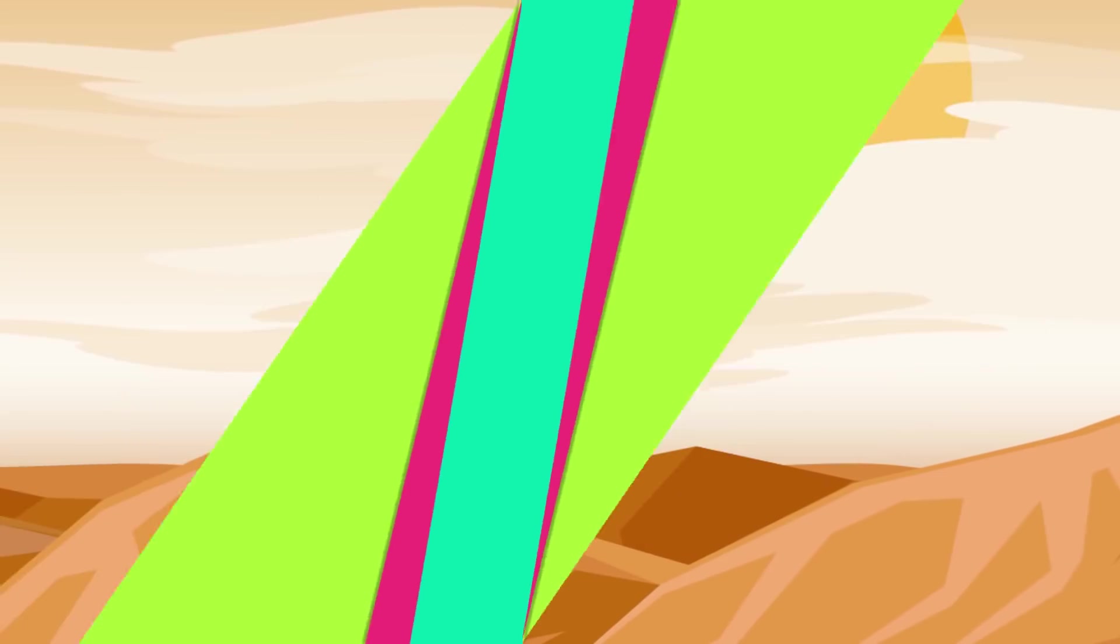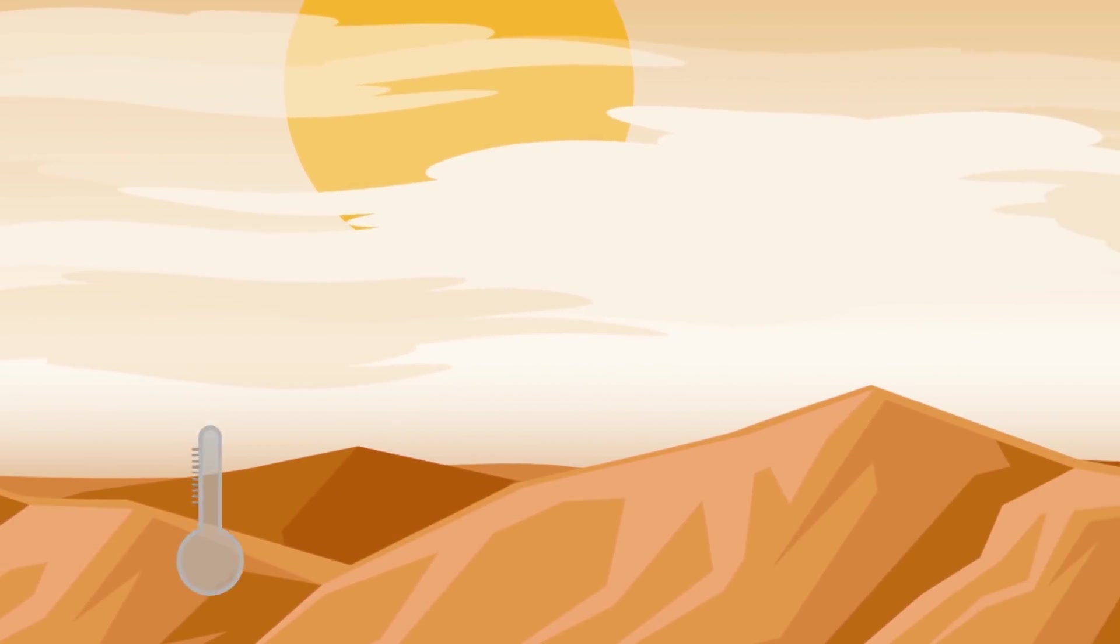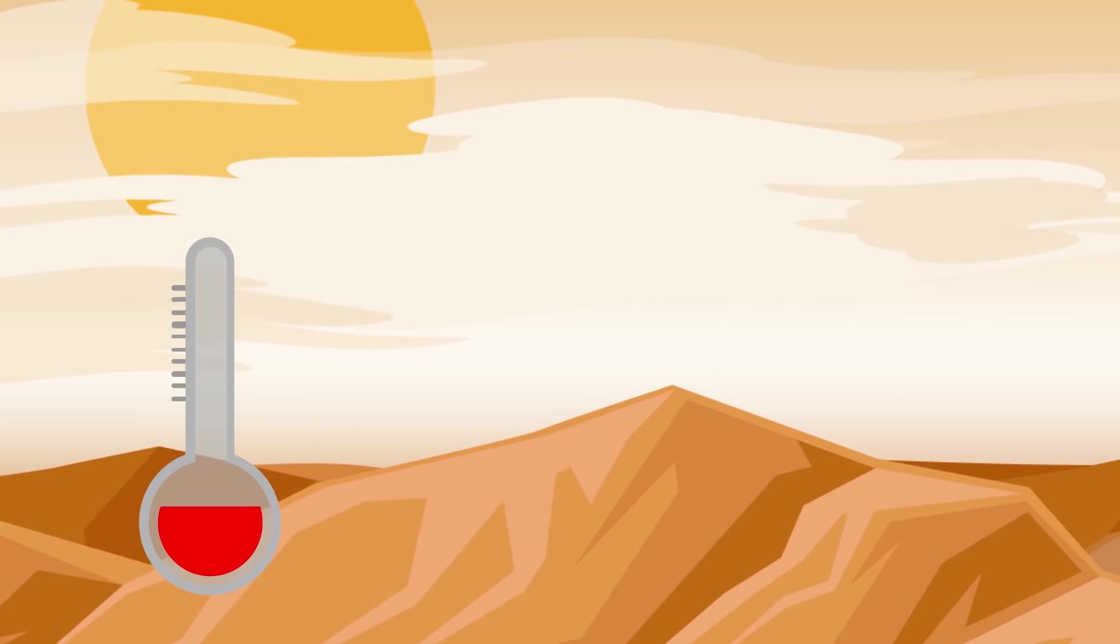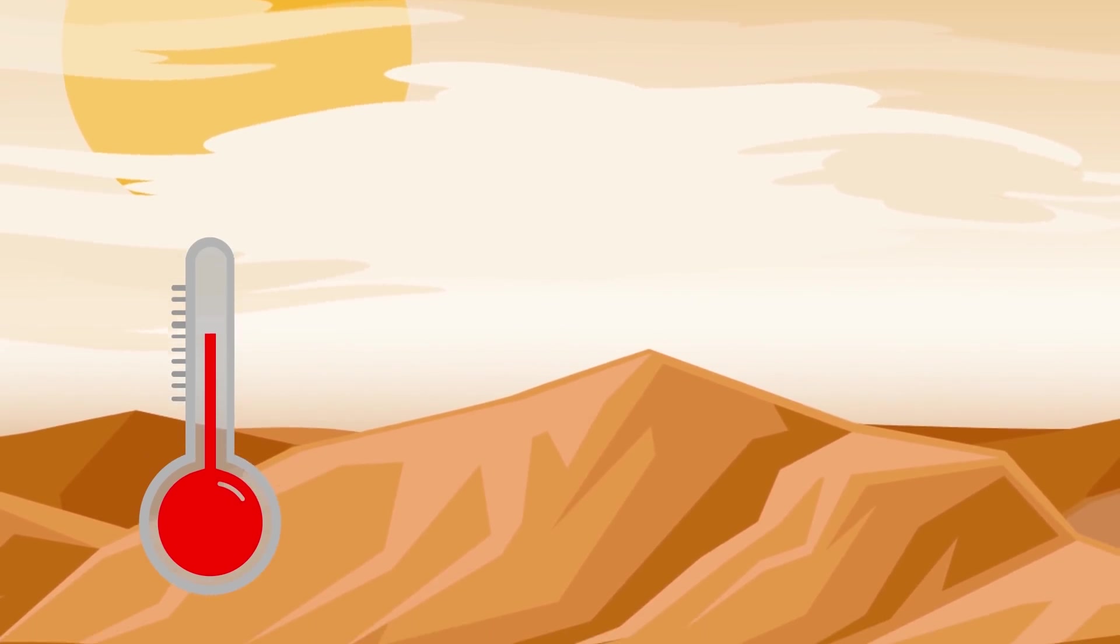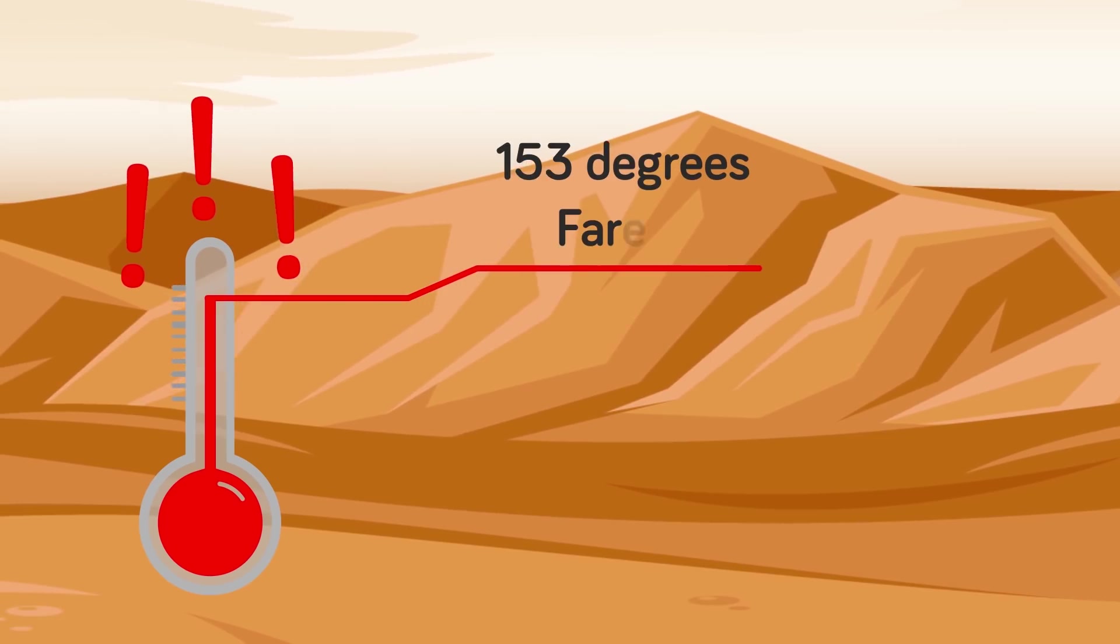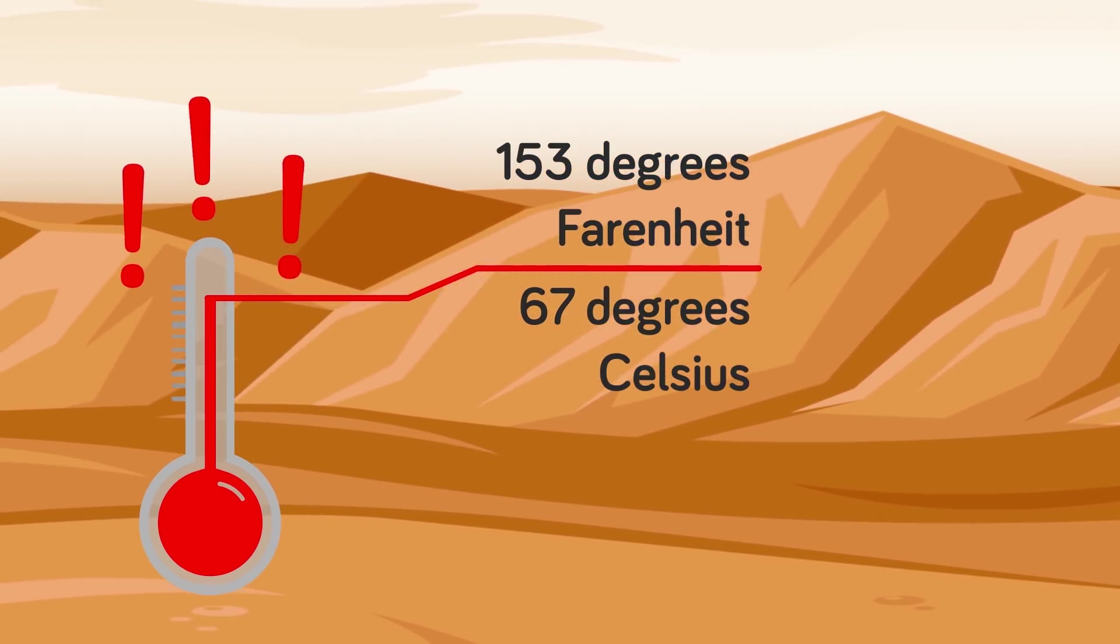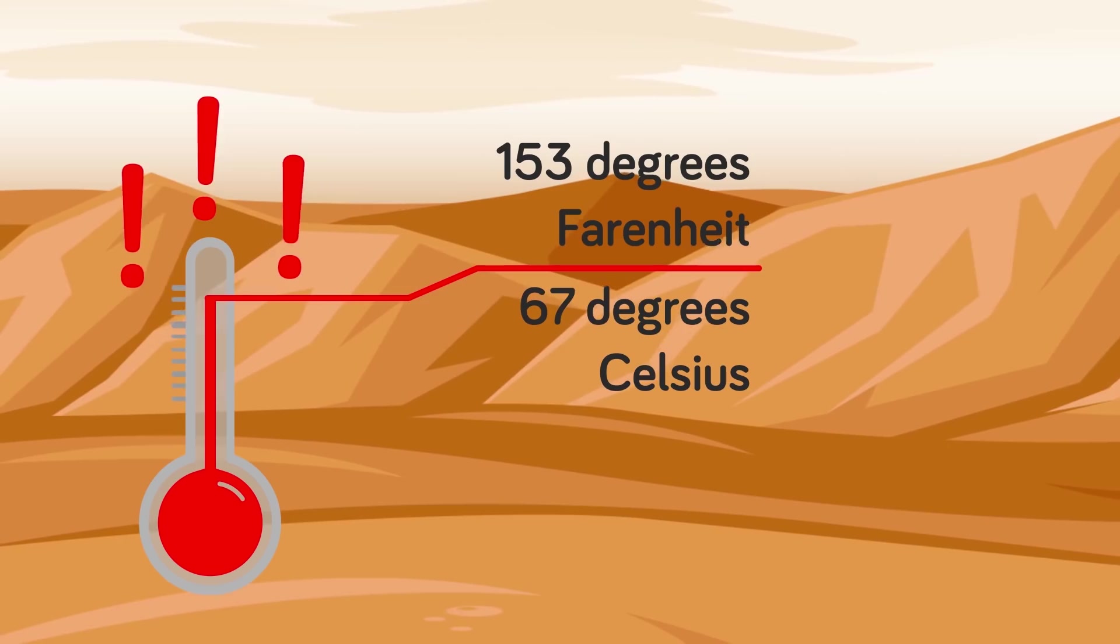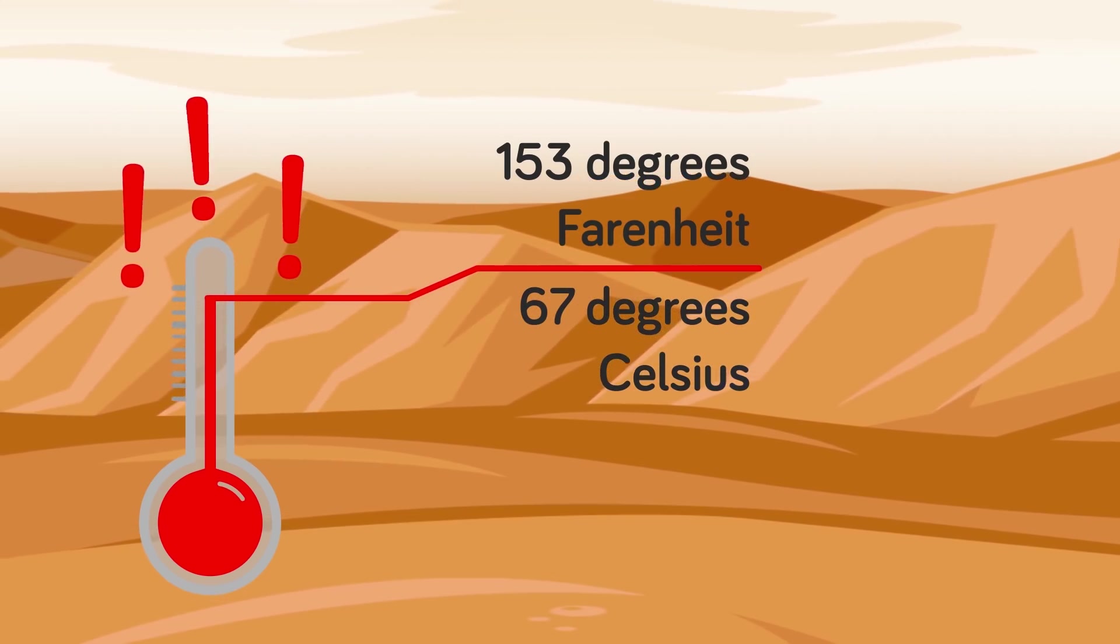At this point, the average temperature on Earth would be around 153 degrees Fahrenheit, making life on the surface completely impossible for any animal. Humanity would be forced to seek shelter from the scorching temperatures above, and our only hope of survival would rest in the short period of time before the Antarctic ice sheet melted completely.